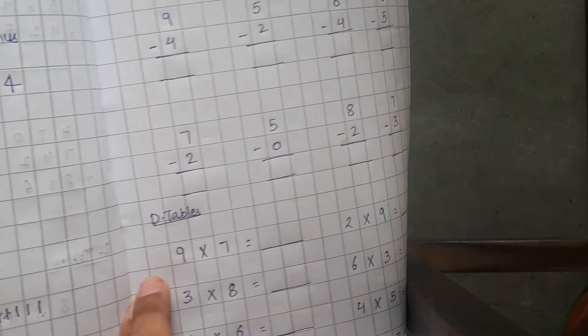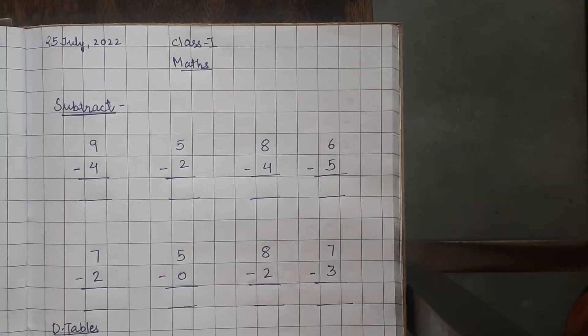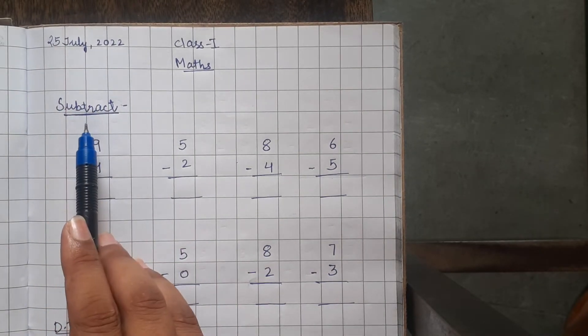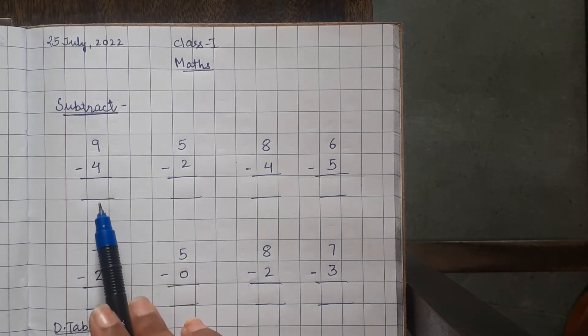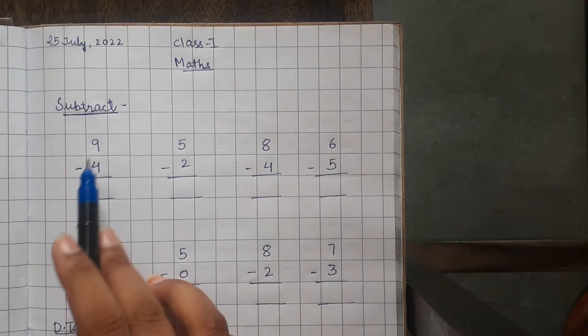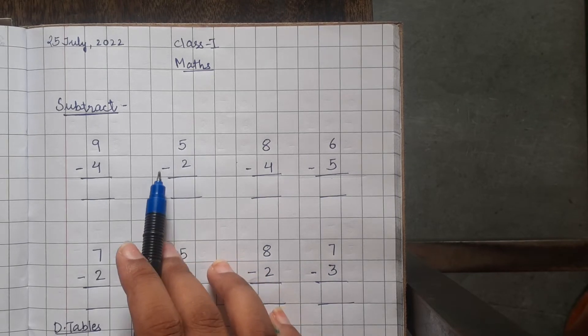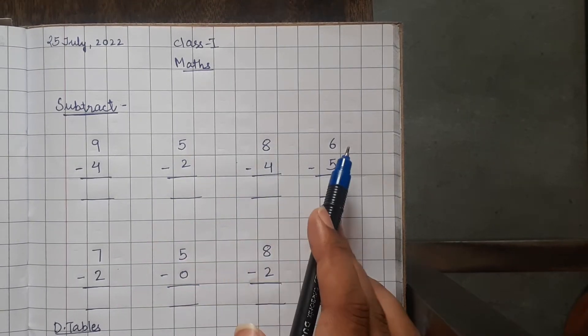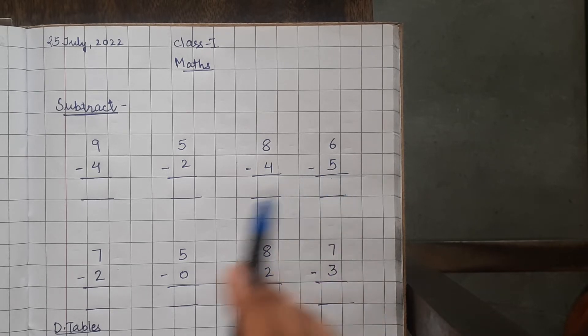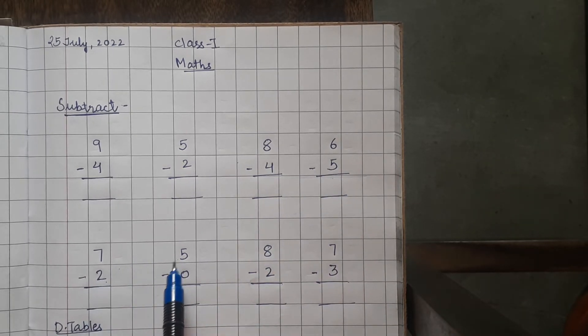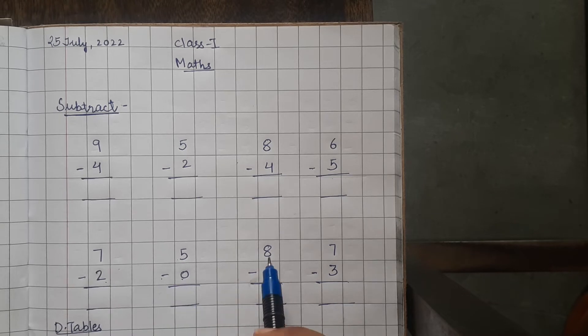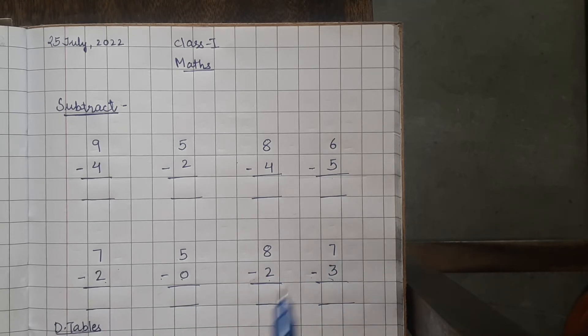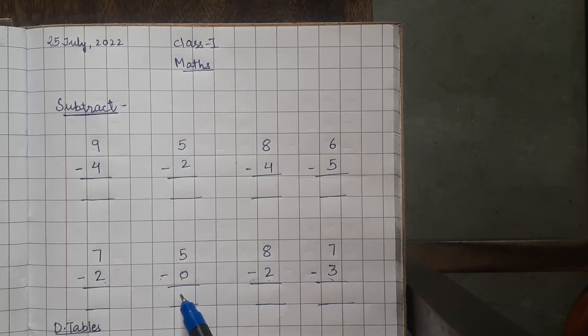Now, students, take out your notebook. You have to do sums in your notebook. So, write the date, write subtraction and note down these sums: 9 minus 4, 5 minus 2, 8 minus 4, 6 minus 5, 7 minus 2, 5 minus 0, 8 minus 2 and 7 minus 3. How do we do these sums with 0?